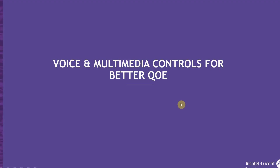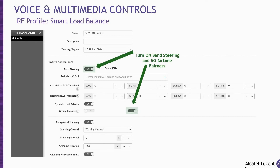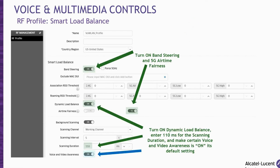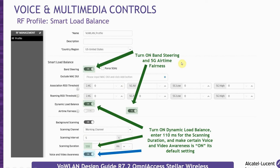Now we get into the voice and multimedia controls for better QoE. The key settings for voice and video awareness are at the RF profile level by enabling band steering and 5G airtime fairness. These are the basic prerequisites to guarantee QoE for these types of applications. The other prerequisites are background scanning and voice/video awareness buttons, which are already enabled by default. Make certain that scanning duration is configured for 110 milliseconds. If you need further clarification on configuration options, please reference the Voice over Wireless LAN design guide.